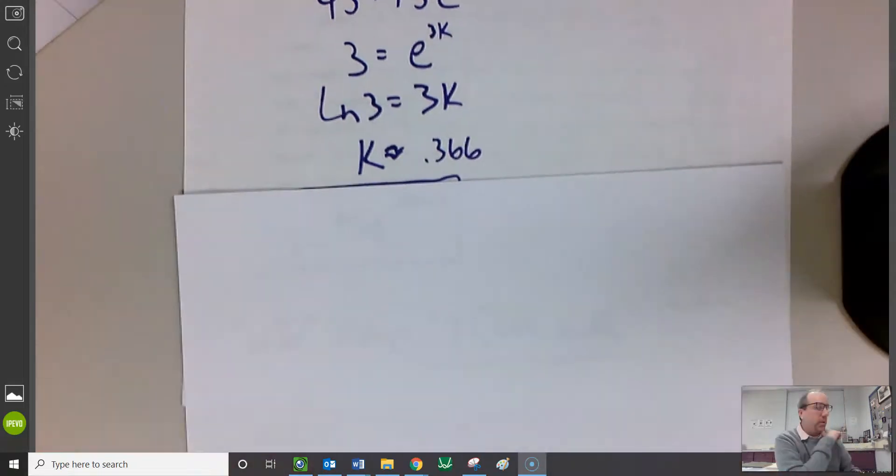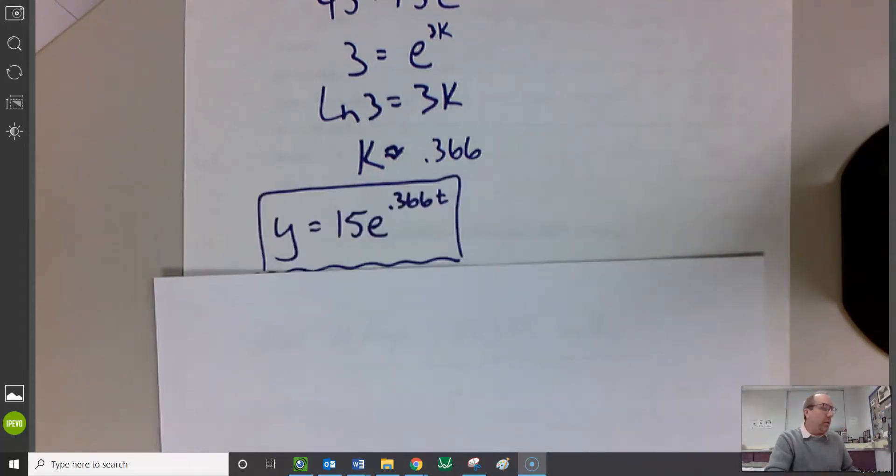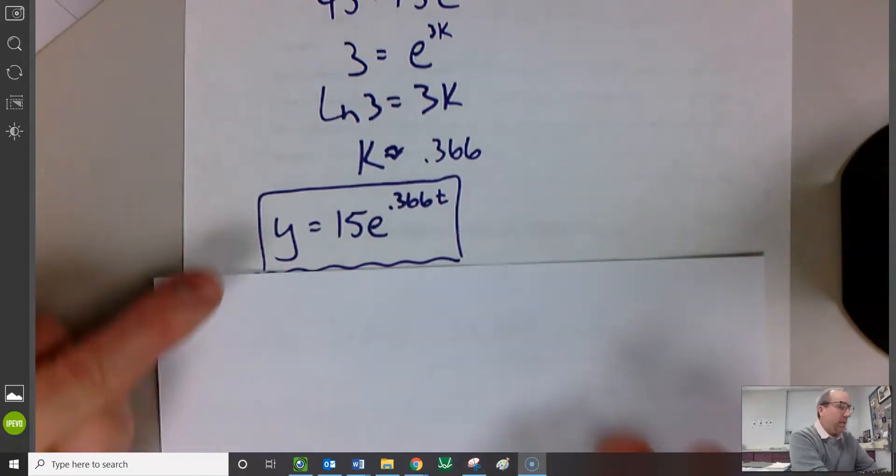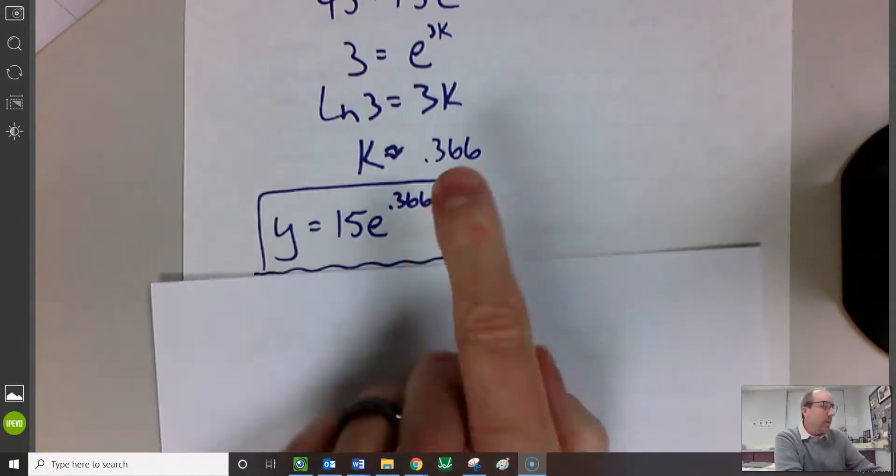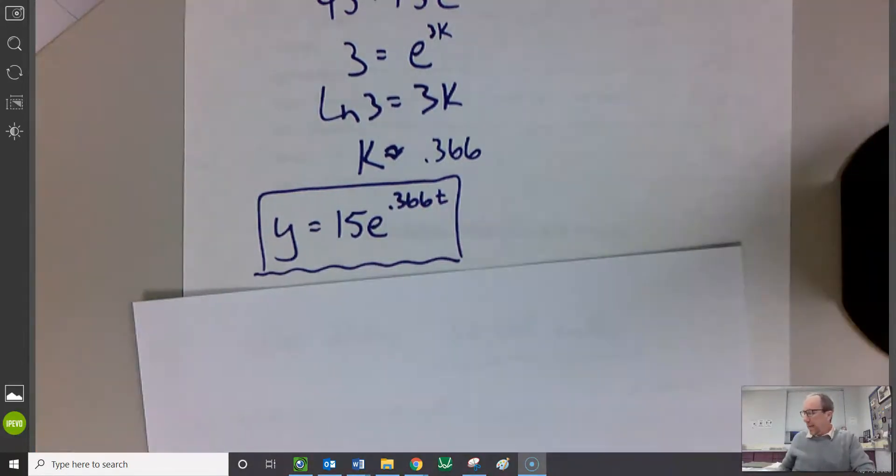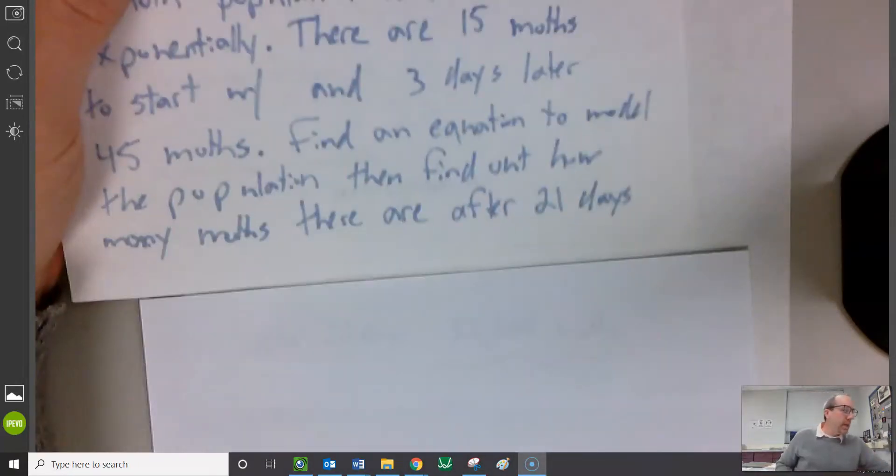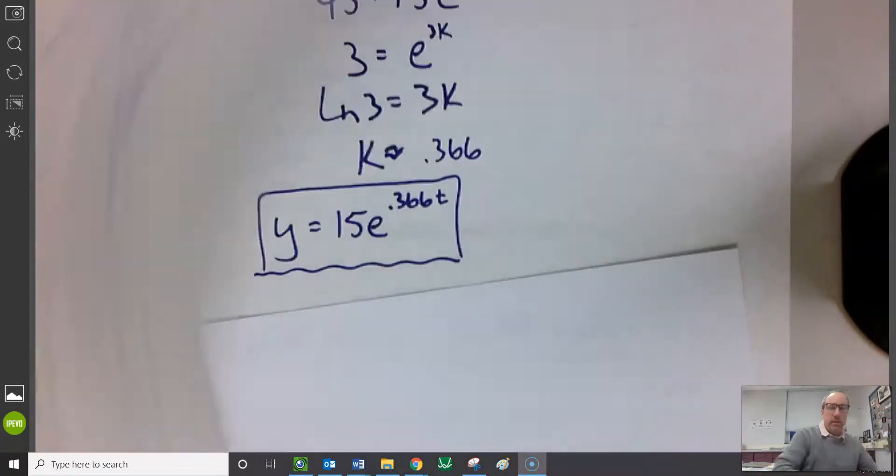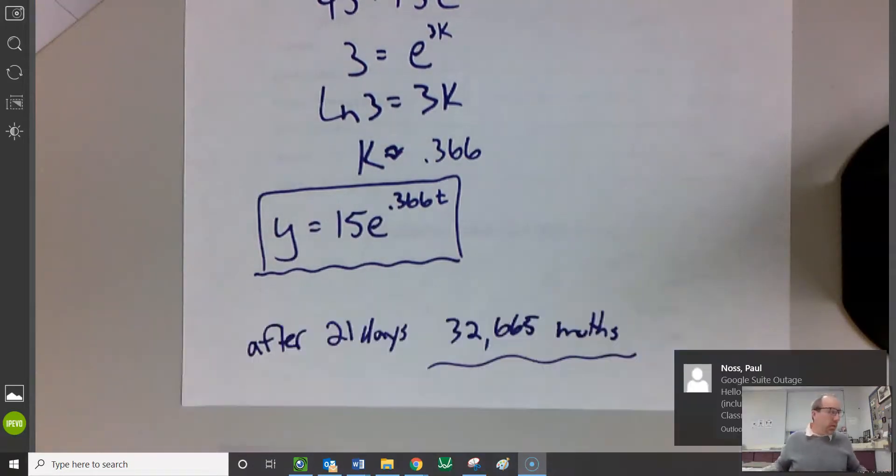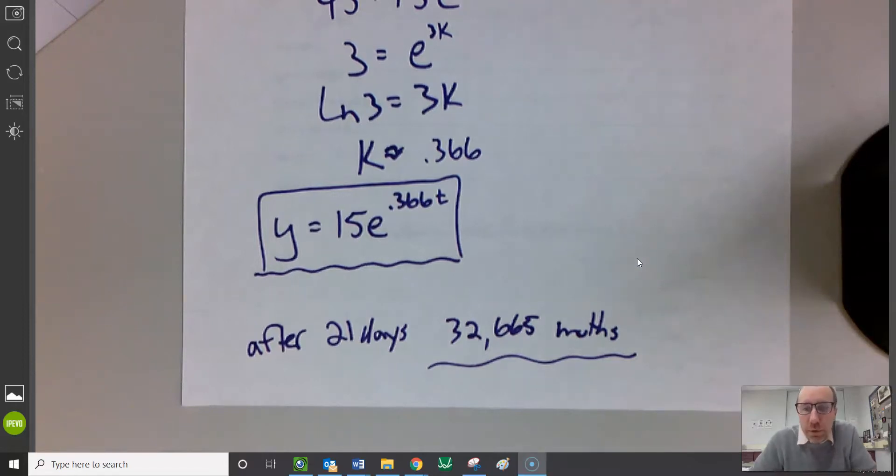If I plug that back in where it goes now, like back substitute, now we know this value, I have an equation. So now it's kind of like the Mr. Edward subscriber problem. I have this equation that will model the moth population, where t is how many days have passed. So the second part of the problem said, how many moths are there after 21 days? I go into that formula, plug in a 21, and we're done. 32,665 moths. We're using these ideas.